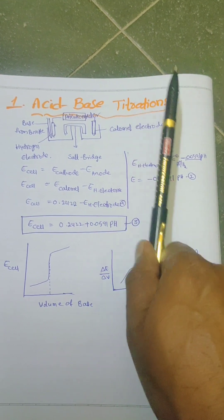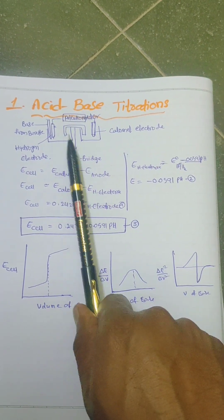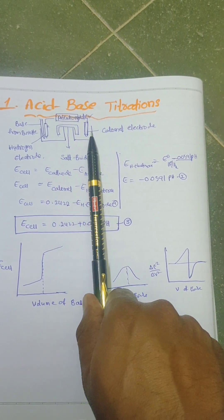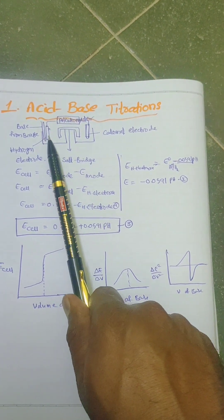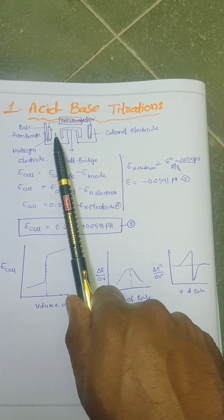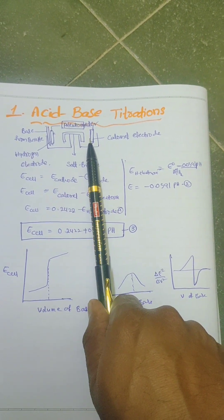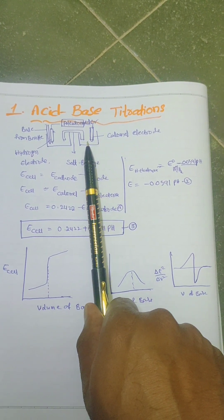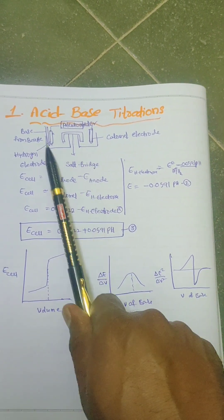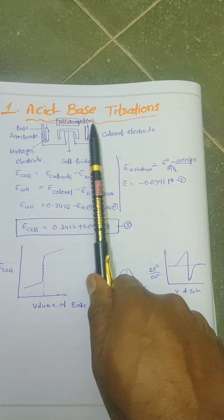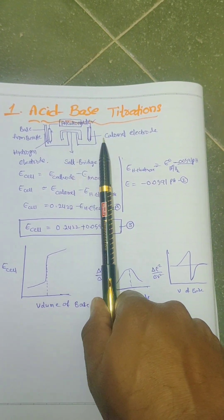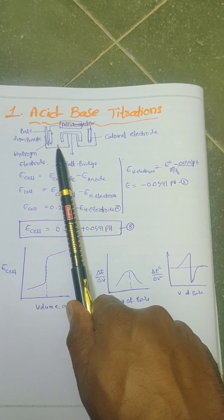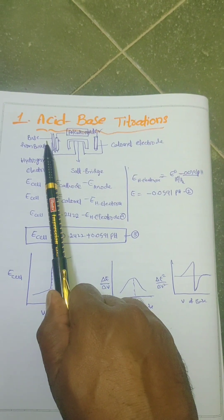In acid-base titrations, a cell is constructed using the hydrogen electrode and the calomel electrode. The hydrogen electrode is kept in the acid solution whose concentration is to be decided, and the calomel electrode is kept in the saturated KCl solution. These two are connected via a potentiometer and a salt bridge. The problem acid solution is titrated against the base.